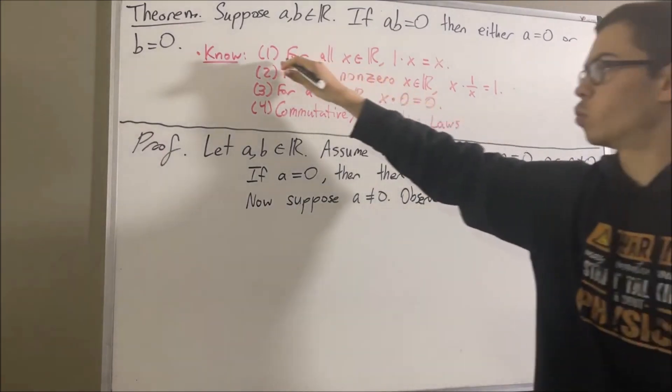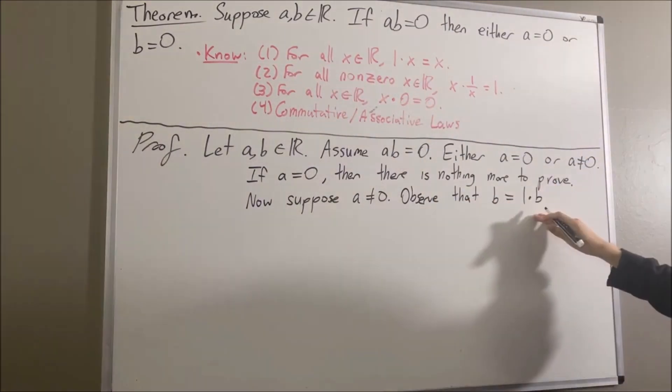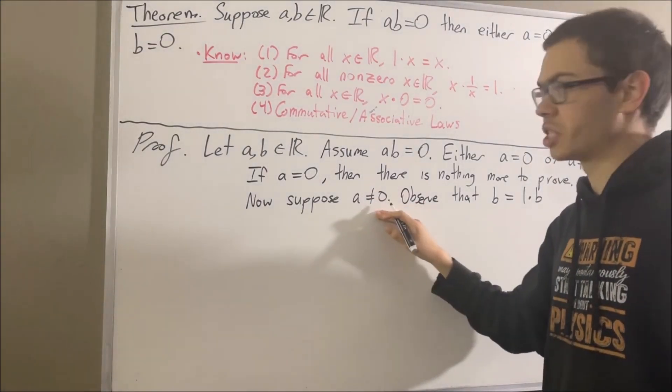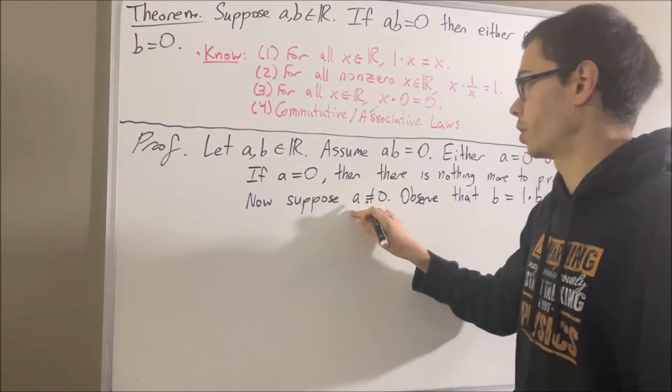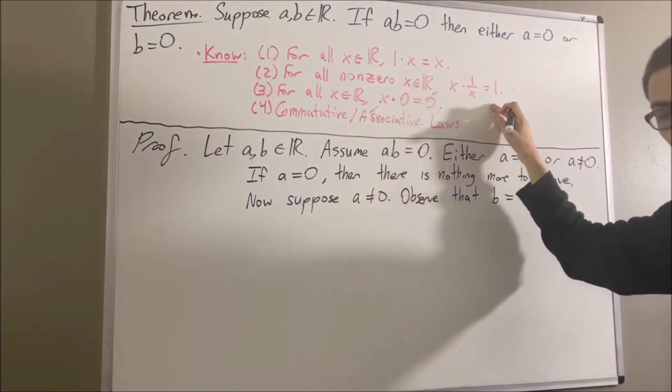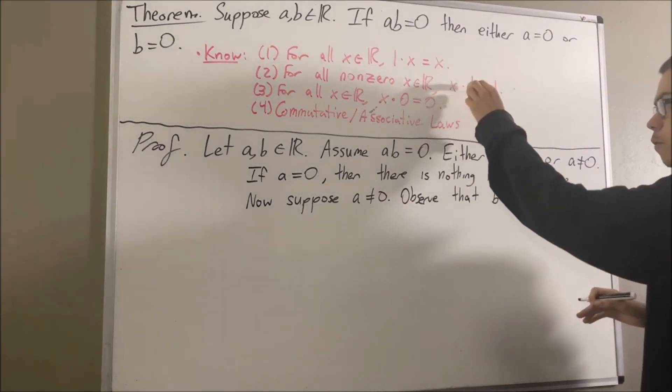We know from fact number 1 that B is equal to 1 times B. And since A is not equal to 0, statement 2 applies to A. So really we have that A times 1 over A is equal to 1. So we can replace the 1 here with A times 1 over A.